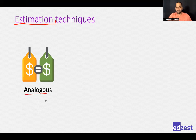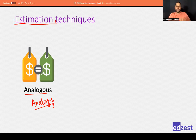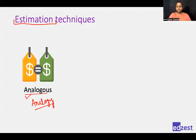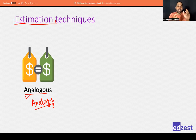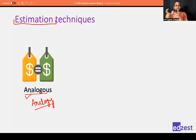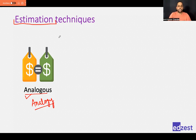The first estimation technique is analogous estimating. The name suggests we are using analogy — looking for similarities. Look at your previous project and see if you have done similar work before; you would know how much time and money it actually took. That actual value from the previous project is a great indication of how much time or money it will take this time, because the activities are similar.